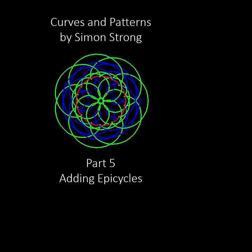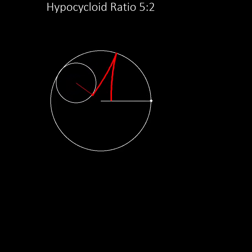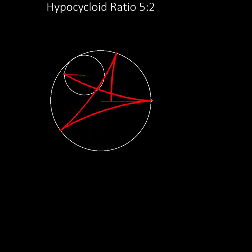The curves we have seen in previous videos have been created by one wheel rolling around the outside or the inside of a circle. For example, here is a hypocycloid curve which we looked at in video 2, where the size of the wheels are in the ratio 5 to 2.